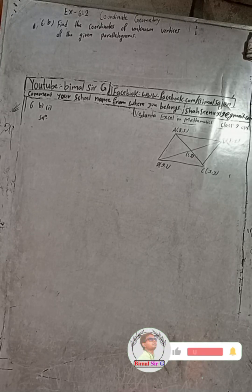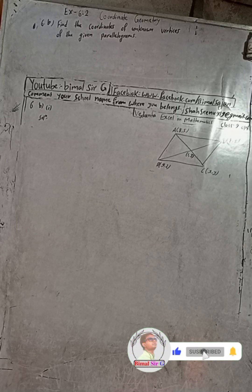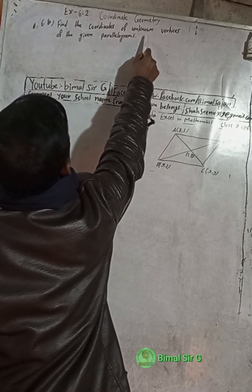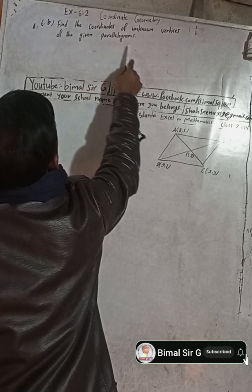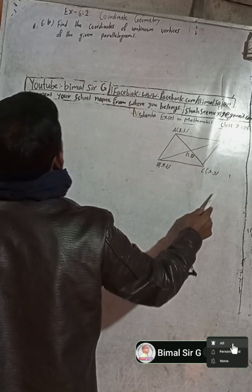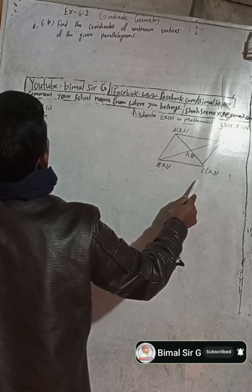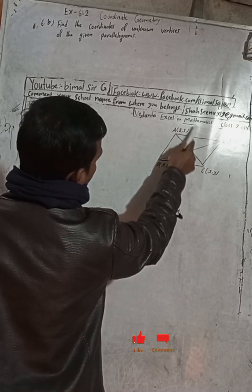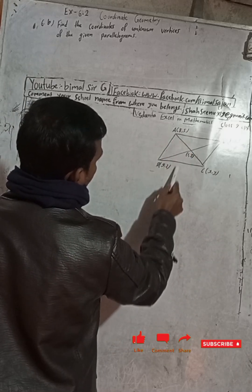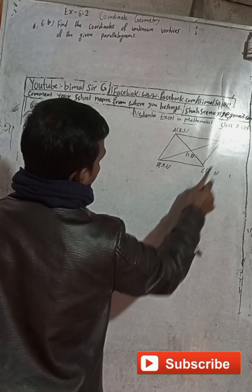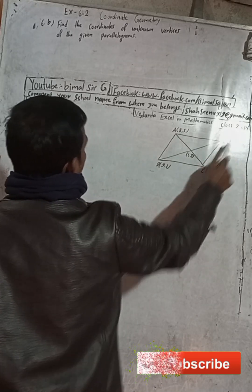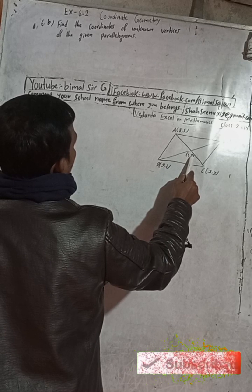This is question number 6b, first part. Find the coordinates of unknown vertices of the parallelogram. We have to find the unknown vertices — A and B are known, and C and D are the unknown vertices that we need to find. The given midpoint is 1 comma 3.